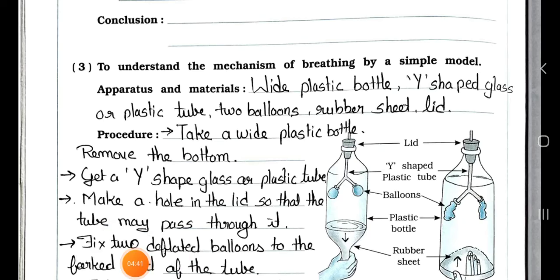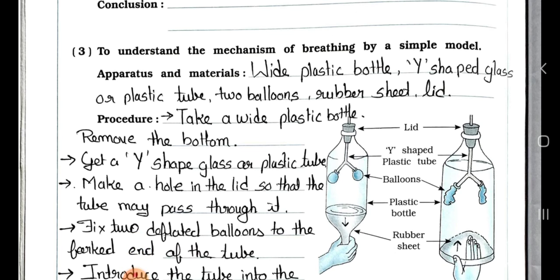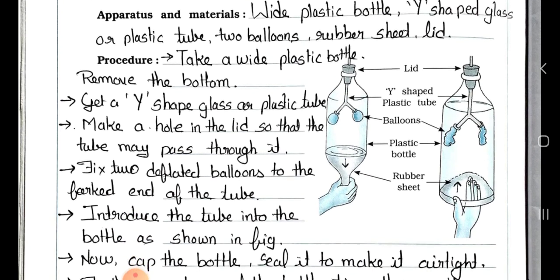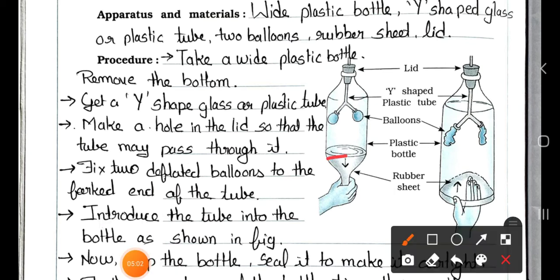Now see the next page. See number 3: To understand the mechanisms of breathing by simple model. Apparatus and materials: wide plastic bottle, Y-shaped glass or plastic tube, two balloons, rubber sheet, lid. Procedure: Take a wide plastic bottle. Remove the bottom. See here the bottom is removed. Okay, it is now supplied with rubber sheet. This is the plastic bottle. Here the balloons are there, and Y-shaped plastic tube, and this one is the lid.